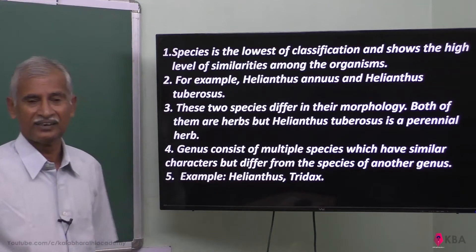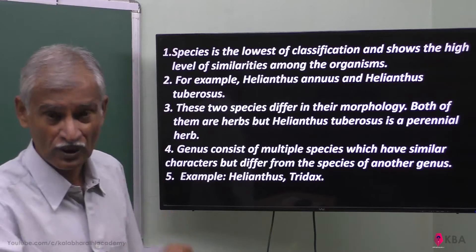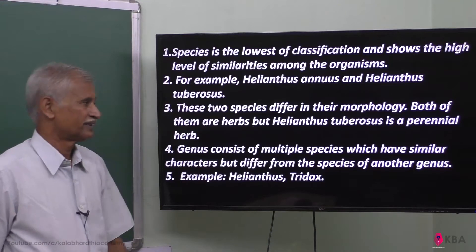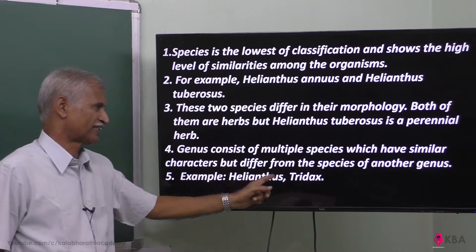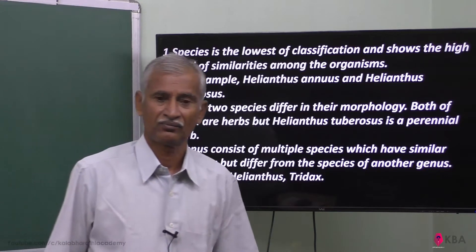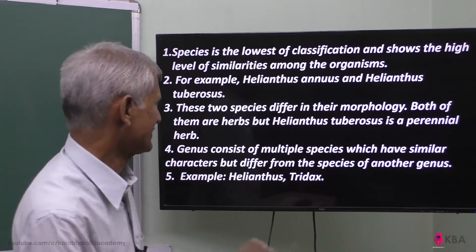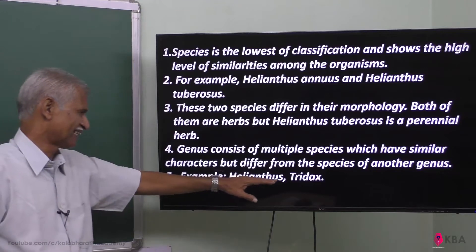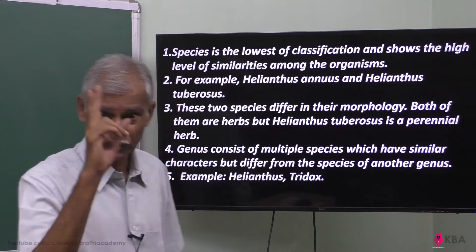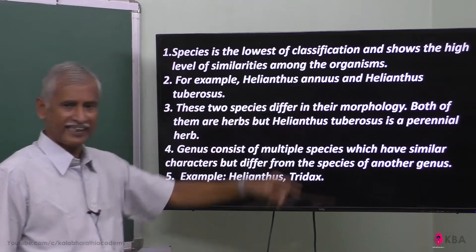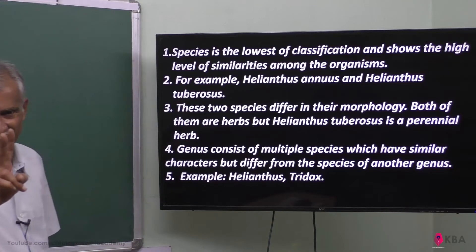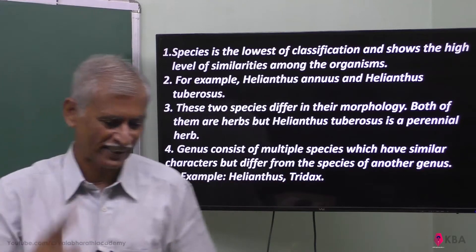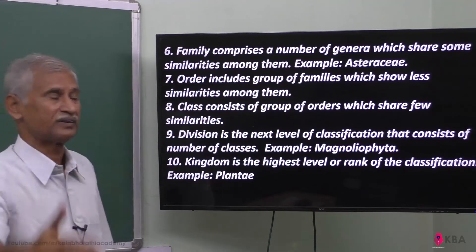A genus consists of multiple species which share similar characters, but differ from species of another genus. In the genus Helianthus, annuus is there, tuberosus is there — two different species. Multiple species will be there in one genus. And Tridax is also a genus, with many species included in it. That is the next step — family.